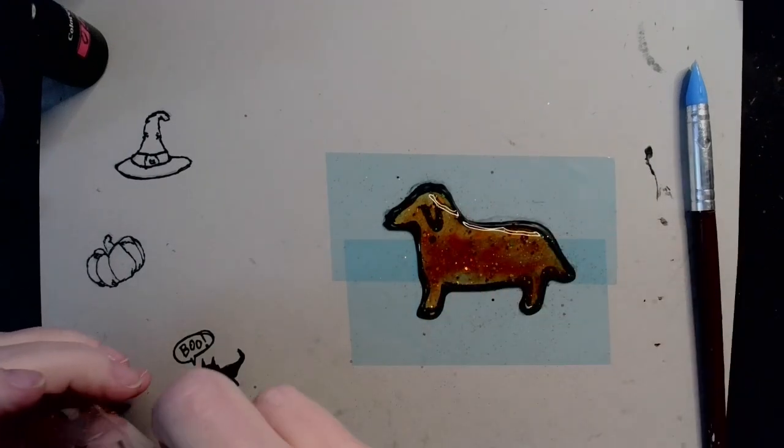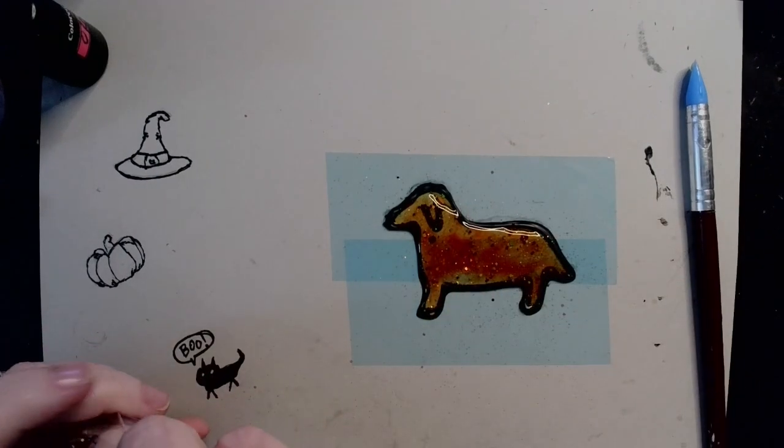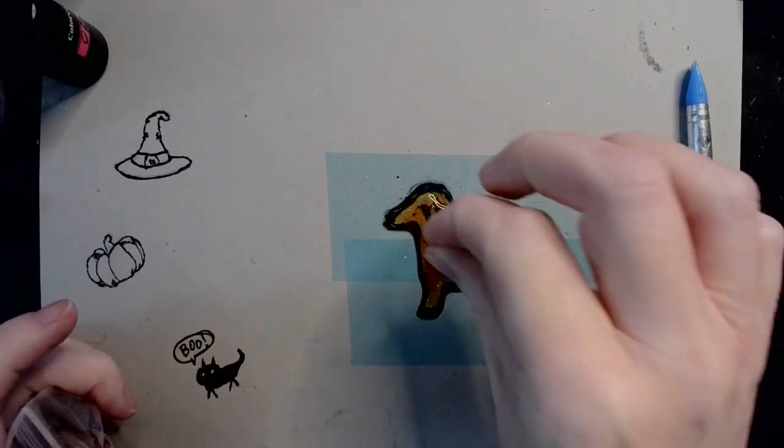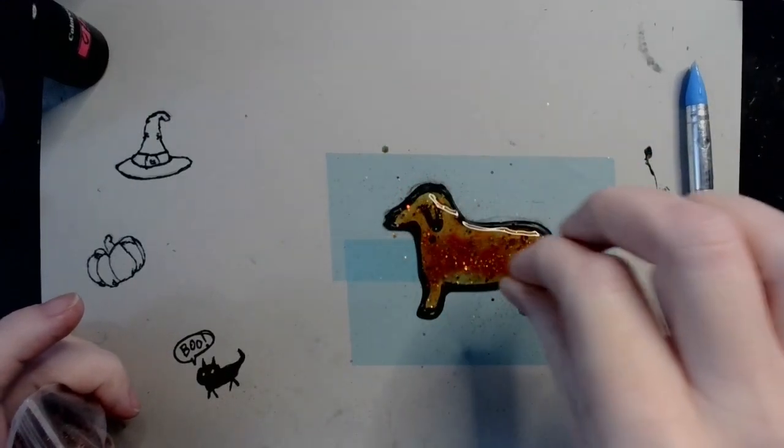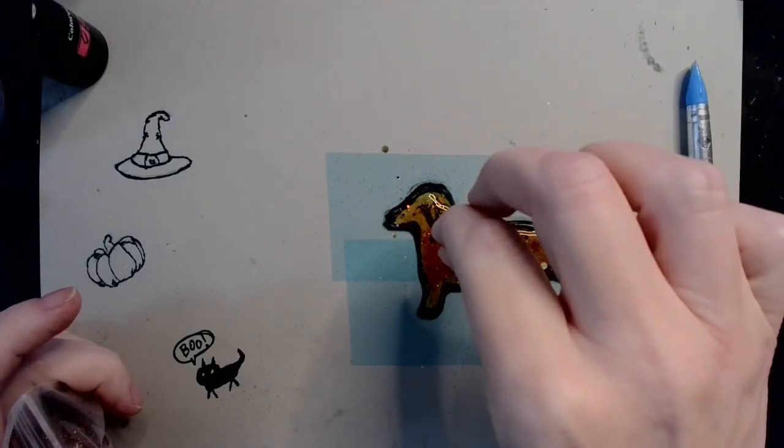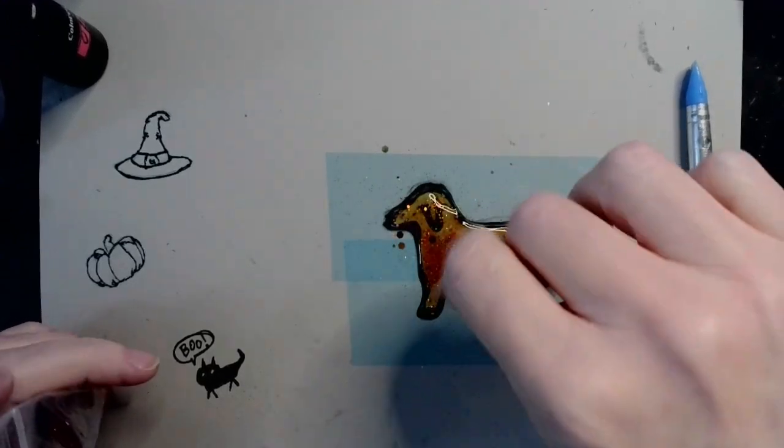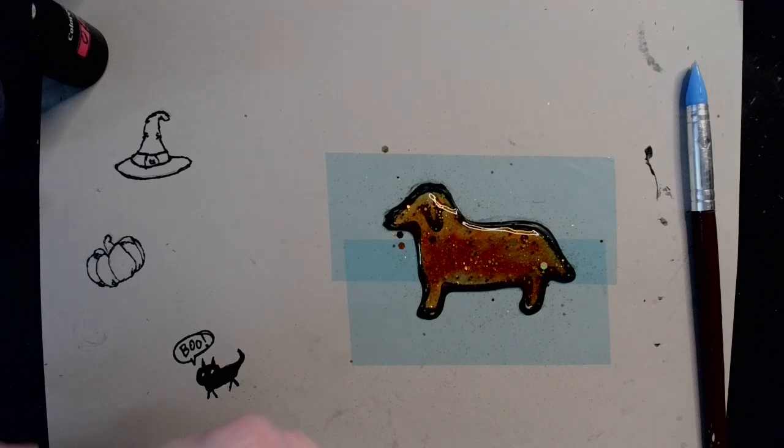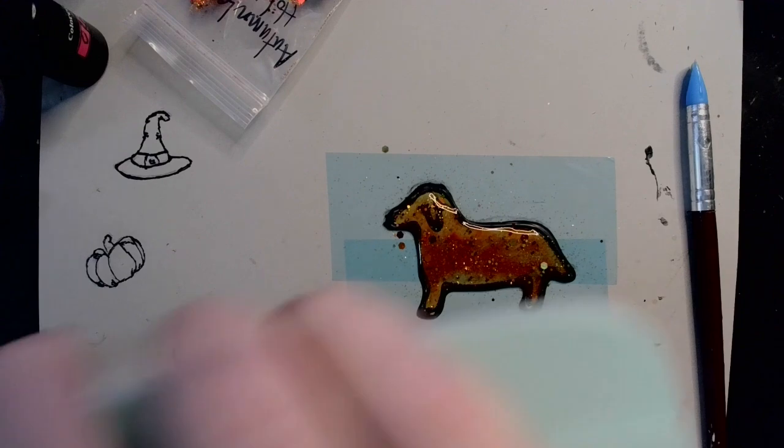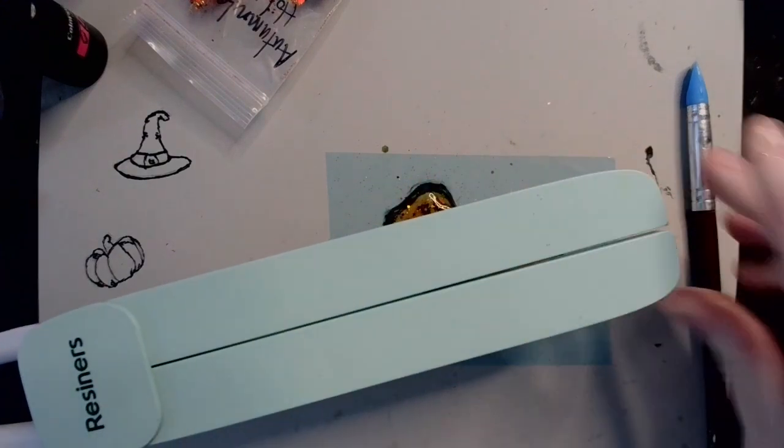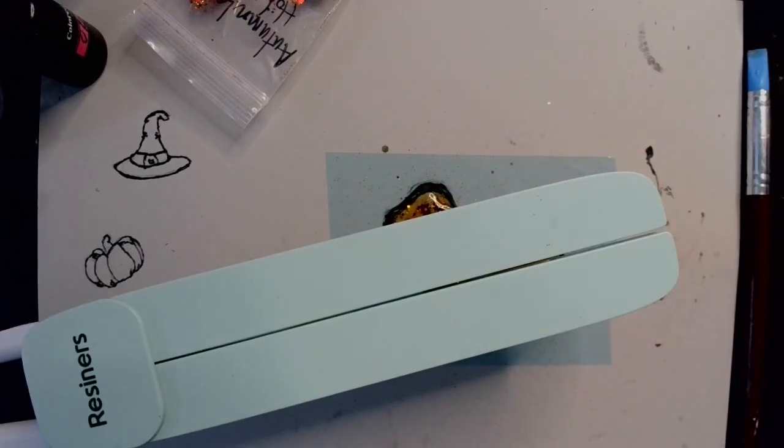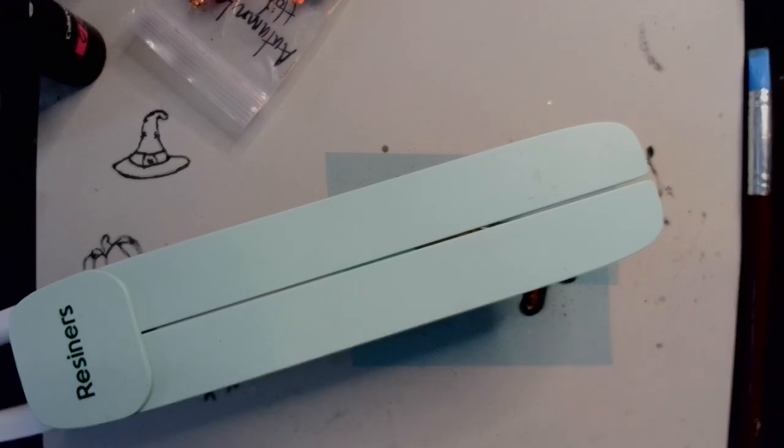And then one more sprinkle of glitter. Now we'll give him another nuke on this side and then we'll flip him over and give him another one on the other side.